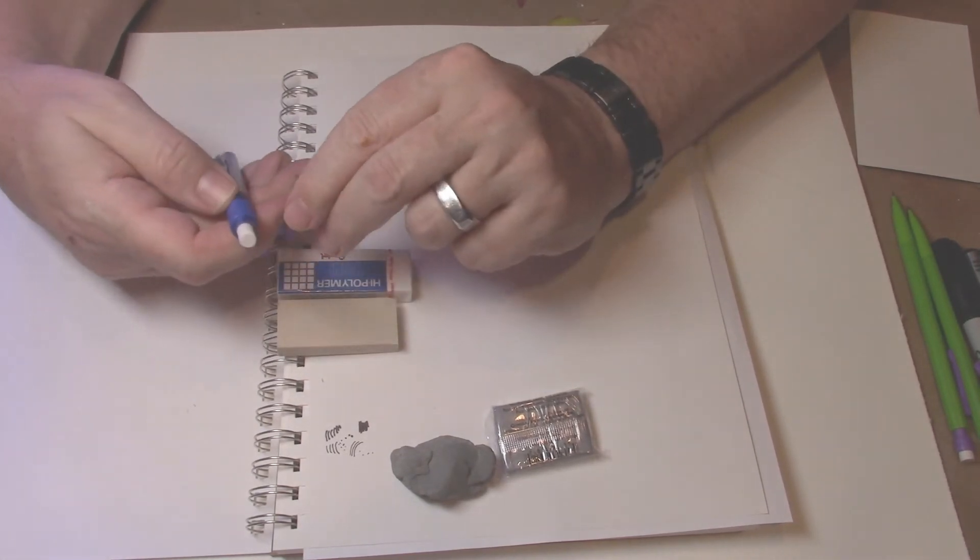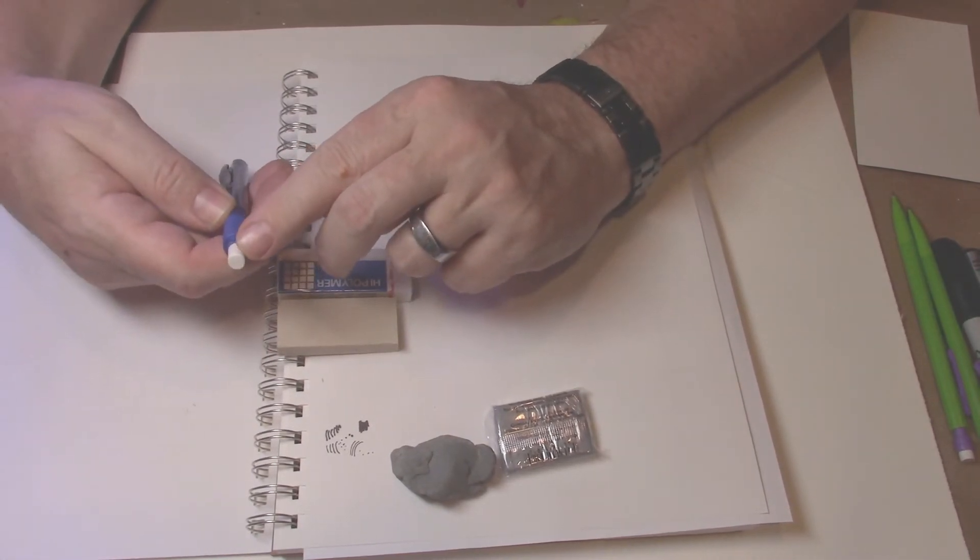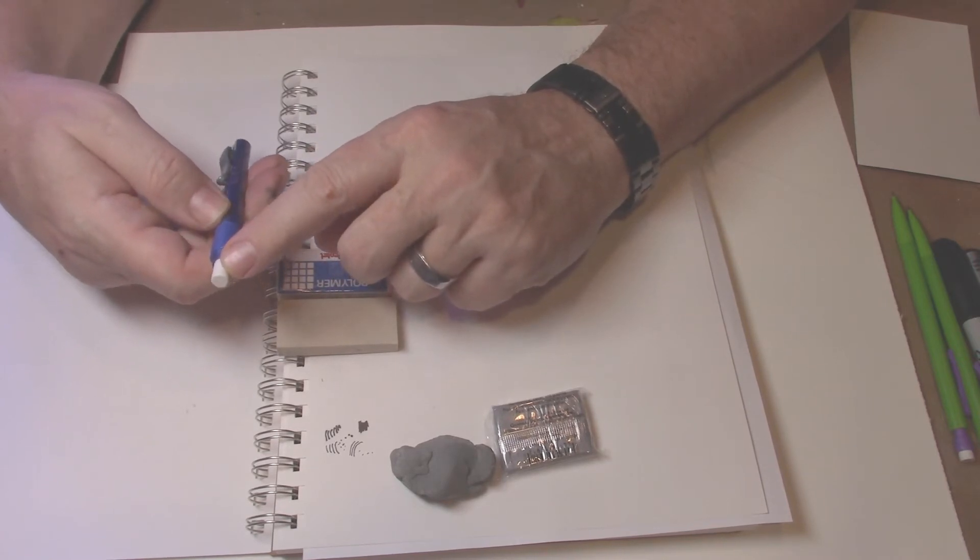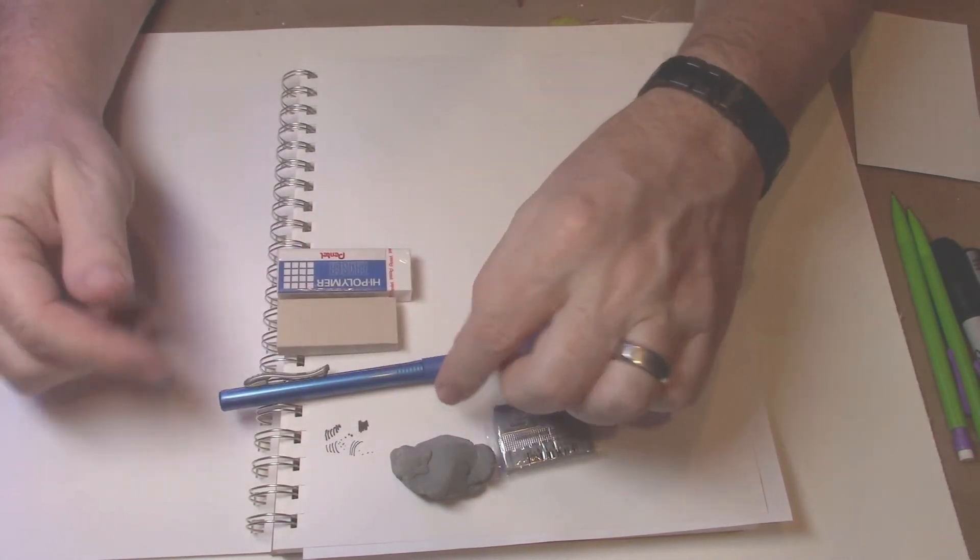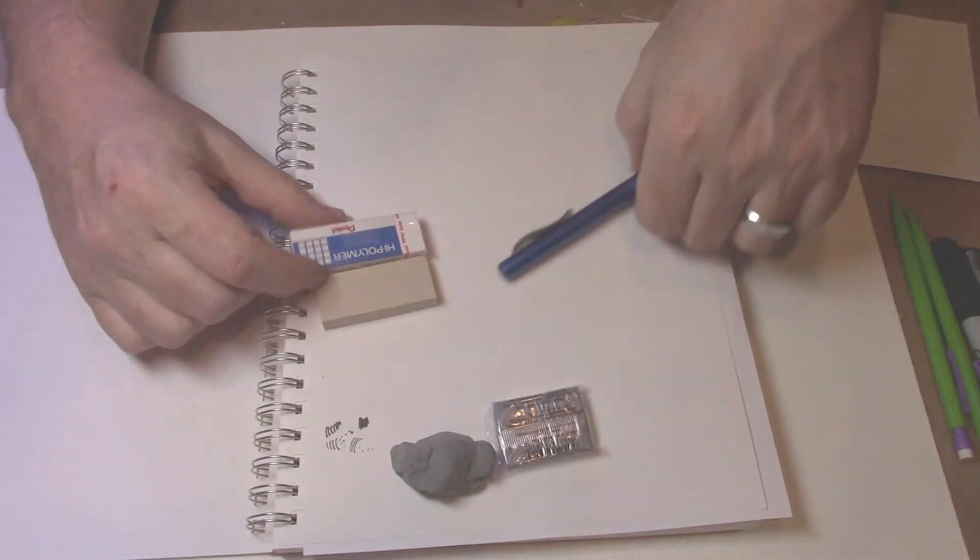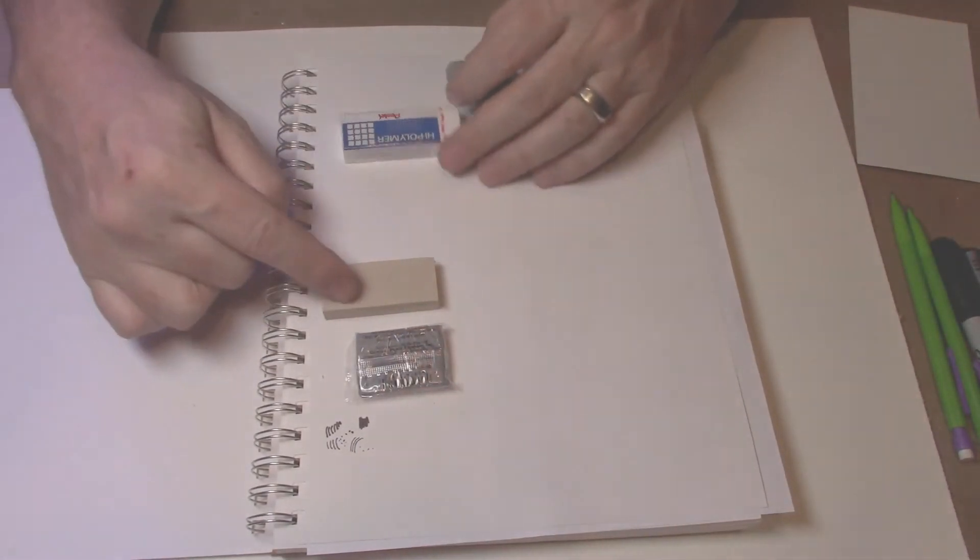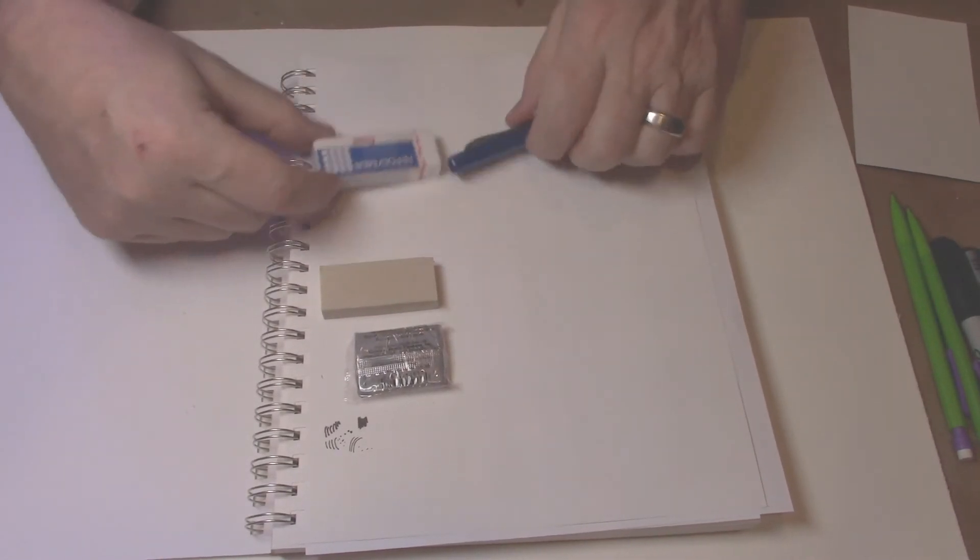If you get grease in there from your hand or from whatever, that will get into the fibers of your paper and you'll never get it off. So always try to work with a clean eraser when you start. So these are some of the erasers you can use. This is all you need. Just two. If you have other ones, that's fine.